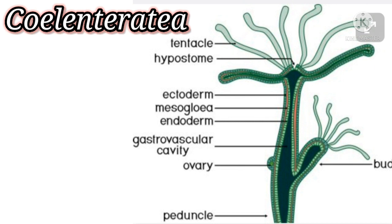Second phylum: Phylum Coelenterata. The special character here is the coelenteron — a fluid-filled gastrovascular cavity. Coelenterates are aquatic organisms, mostly marine with few freshwater forms. They are multicellular, having many cells.